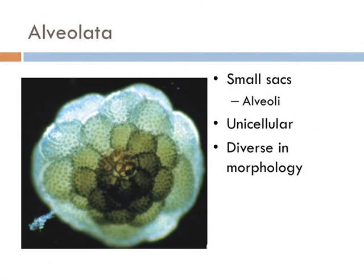Another major group is the alveolata. The most notable characteristic shared amongst this group is the presence of alveoli — sacs that form a continuous layer supporting the membrane. However, that's basically the only thing they have in common, as they have a very diverse morphology amongst the organisms within this group.